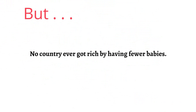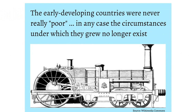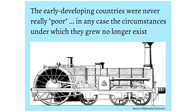No country ever got rich by having fewer babies. The one-child policy was, in its own way — a human rights catastrophe, but effective in its own way for raising people out of poverty. But a one-child policy is not going to make China a rich country. In fact, very few countries have ever gotten rich at all. The early developing countries of Western Europe and North America were never really poor — for 500 years they have been among the richest areas of the world, always at the economic forefront.